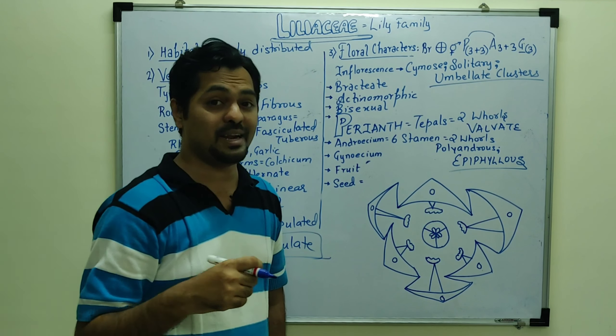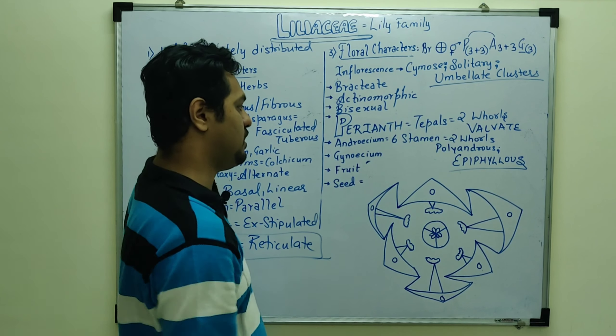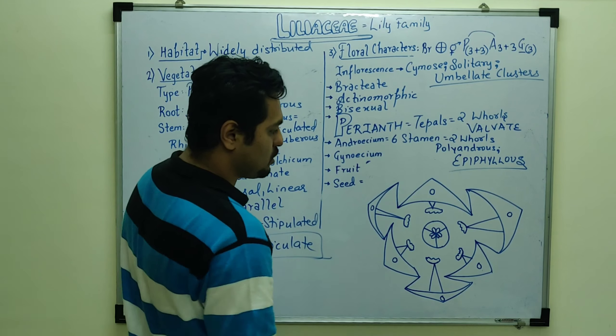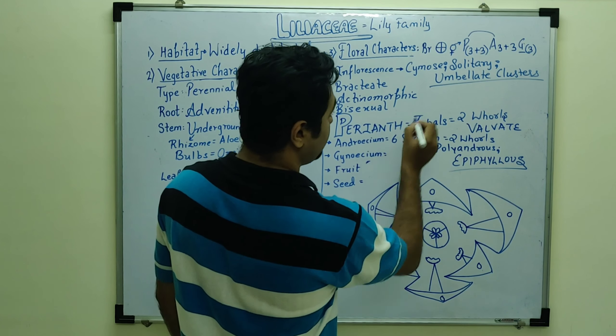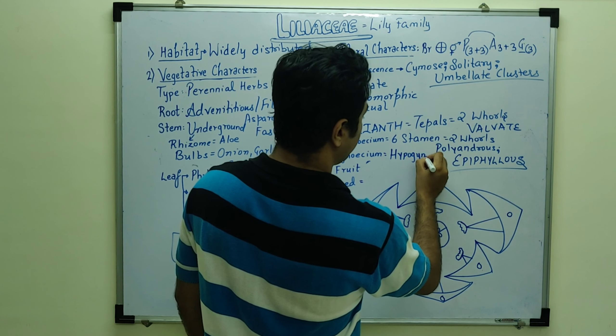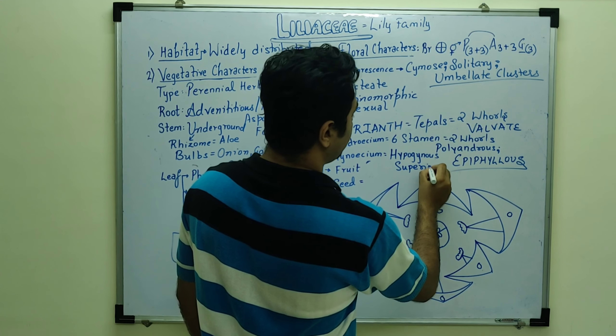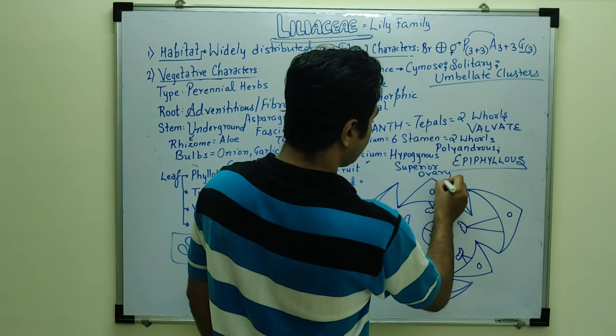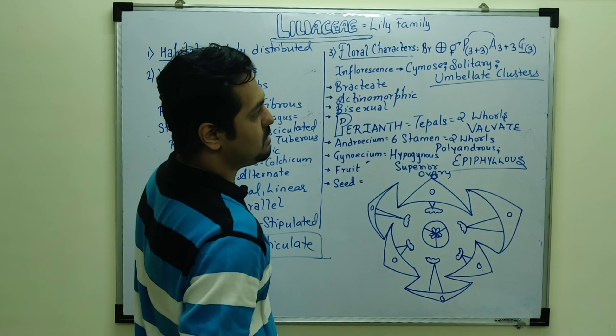And the stamens which are free, it shows polyandrous condition. But here the stamens are attached to the tepals, so this is the epiphyllous condition. Solanaceae had epipetalous condition. Gynoecium is hypogynous flower with superior ovary.